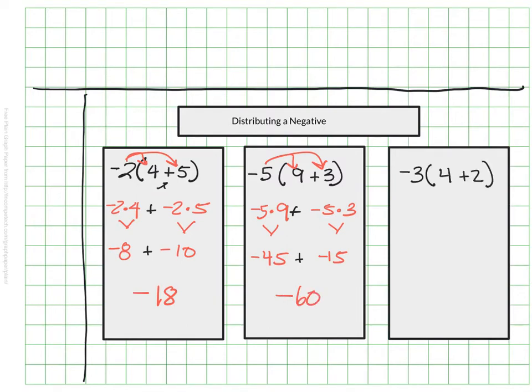Go ahead and try this one, negative 3 times the quantity of 4 plus 2, showing the steps of distributing that negative 3 across both values. So take a moment, pause the video, give it a try, and we'll see how you did. How'd you do? Did you notice that it was negative 12 plus negative 6 for a total of negative 18? Hopefully. But we'll keep practicing, just in case.